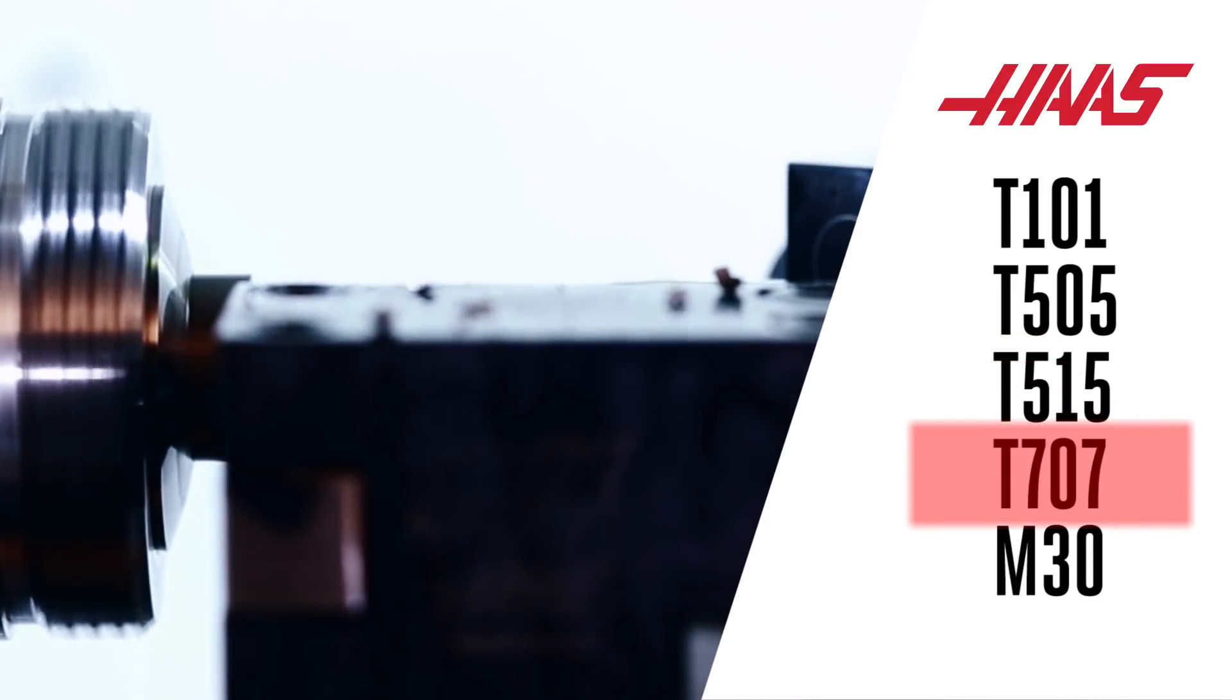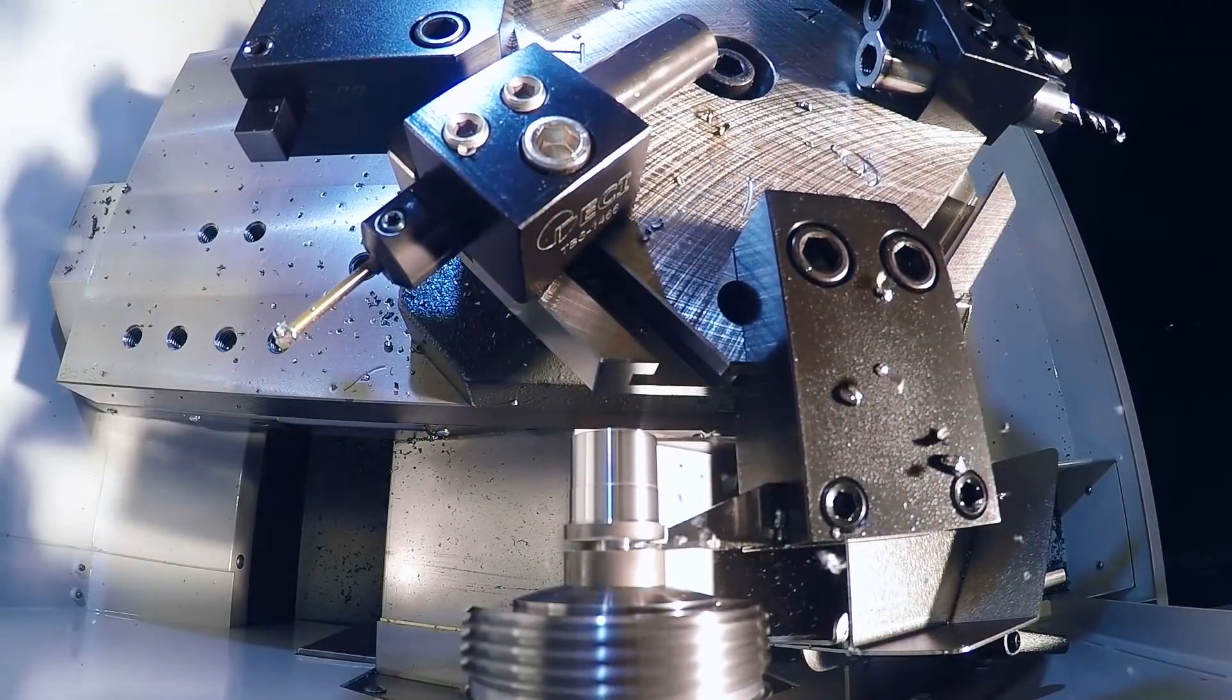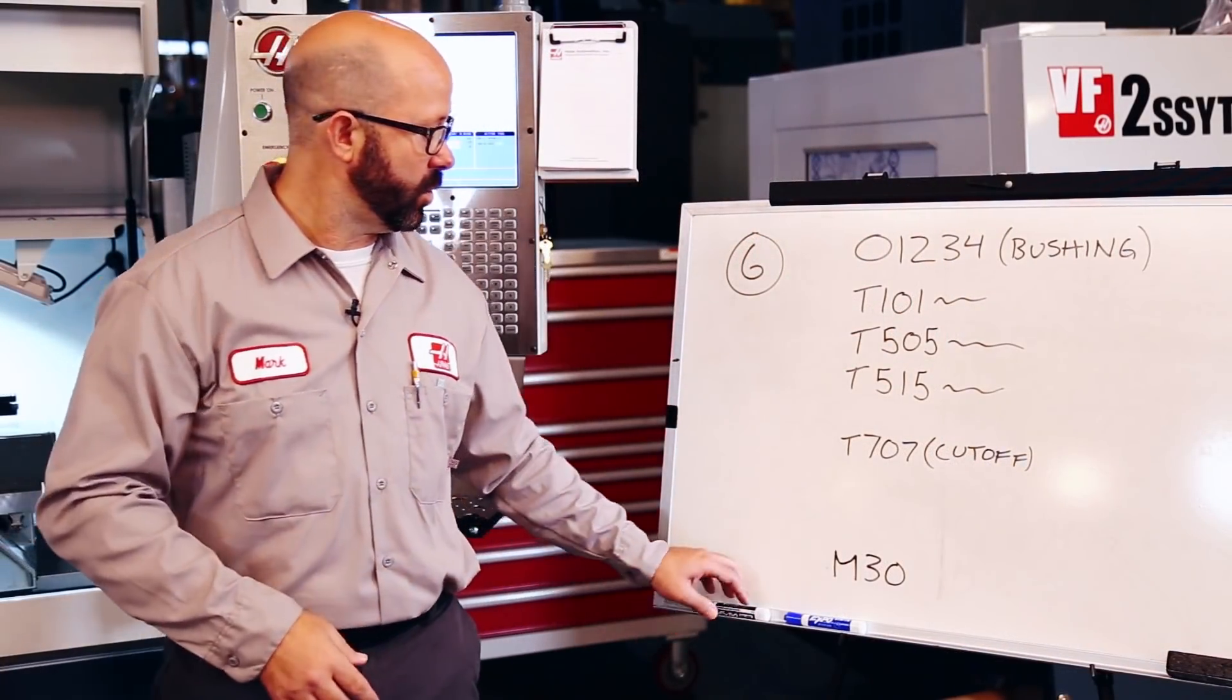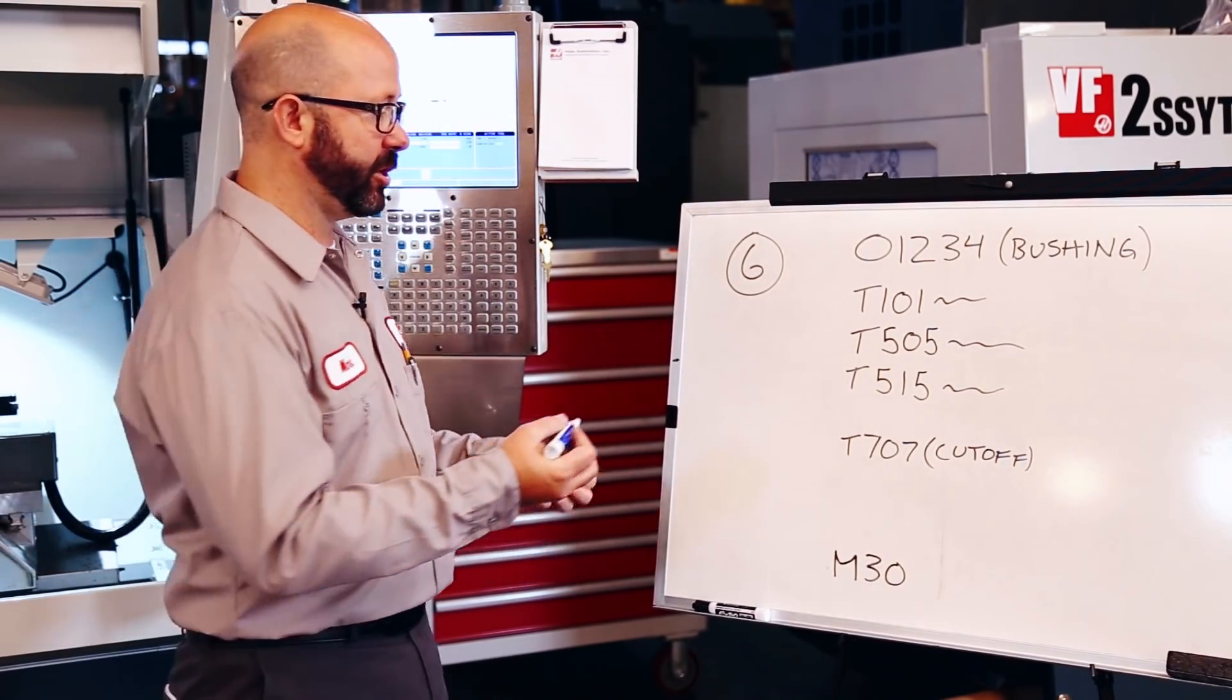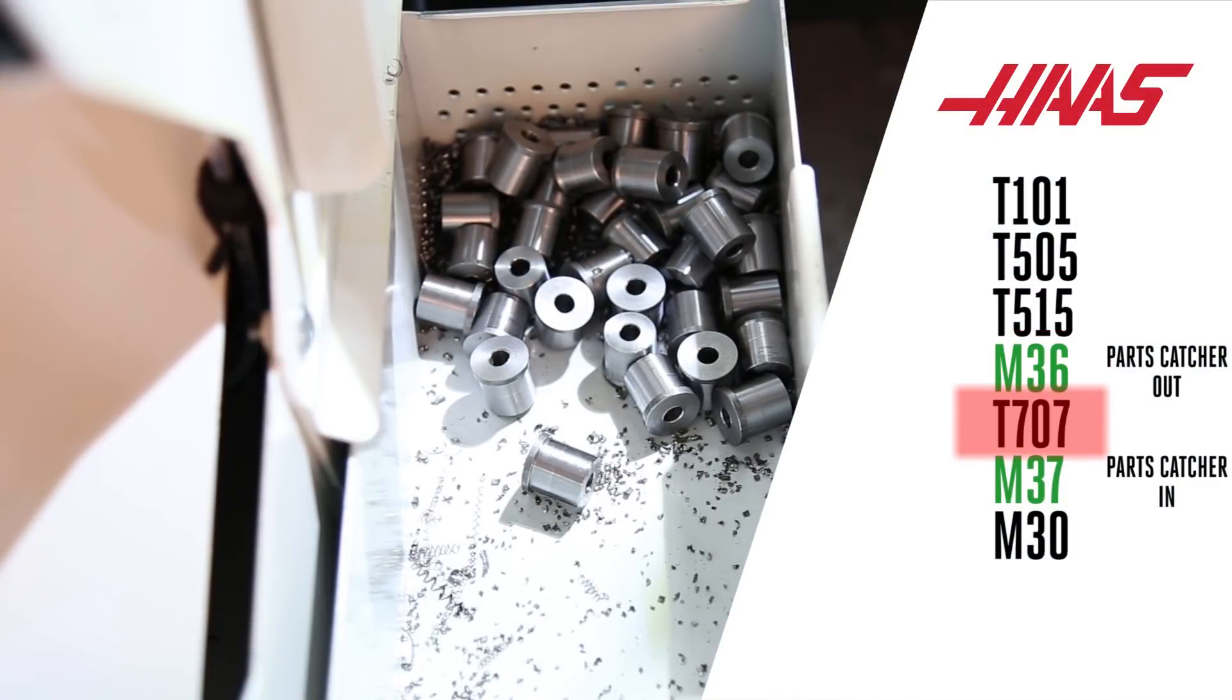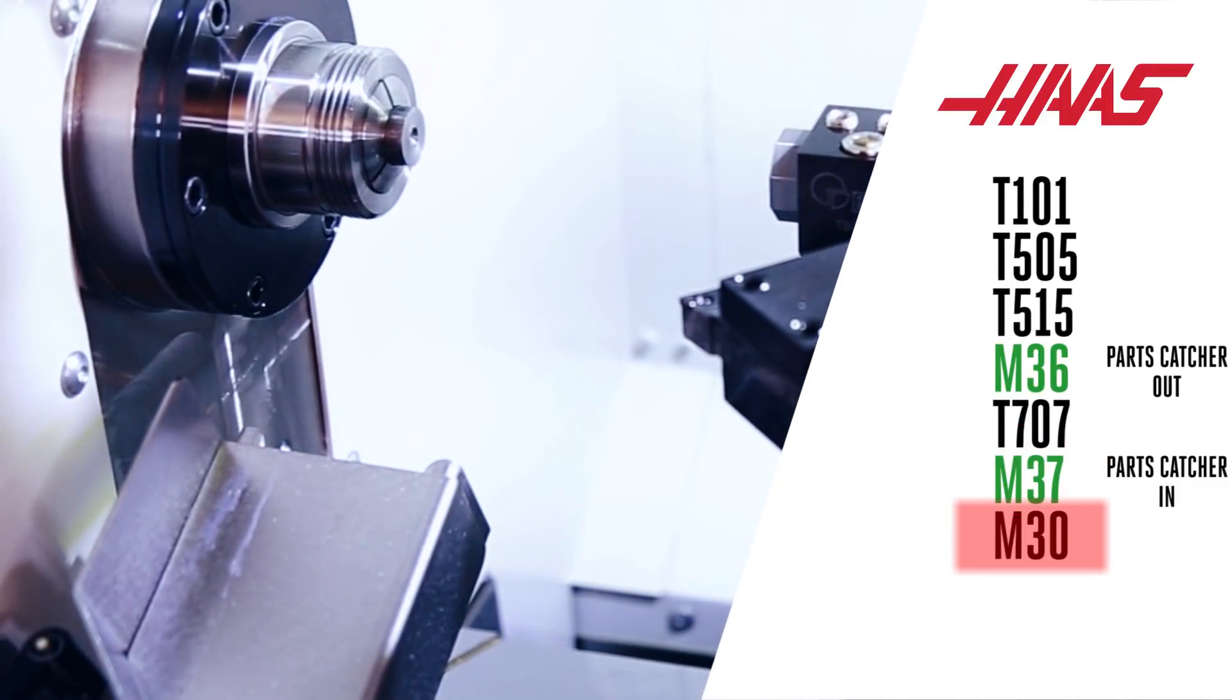Once an M30 is reached, our program ends. Now, this particular CL is equipped with an optional parts catcher. And this is commanded using an M36 and an M37. M36 is the parts catcher out. M37 commands the parts catcher in. So we're gonna bookend our cutoff tool with those codes. I'm gonna add an M36, parts catcher out, just prior to my cutoff. And then I'm gonna add an M37, parts catcher in, just after the cutoff.